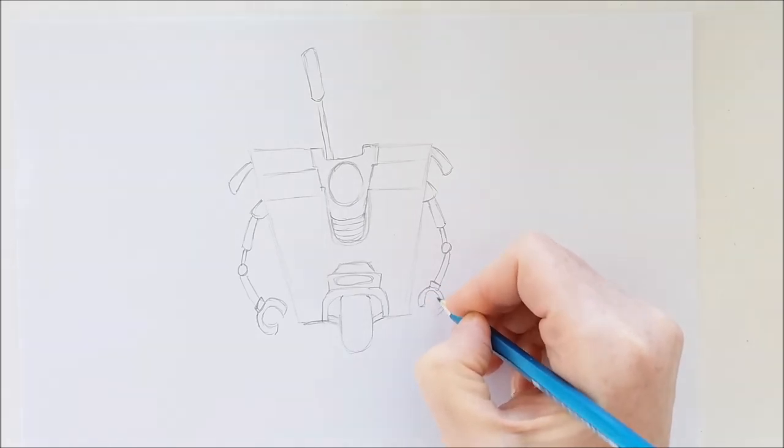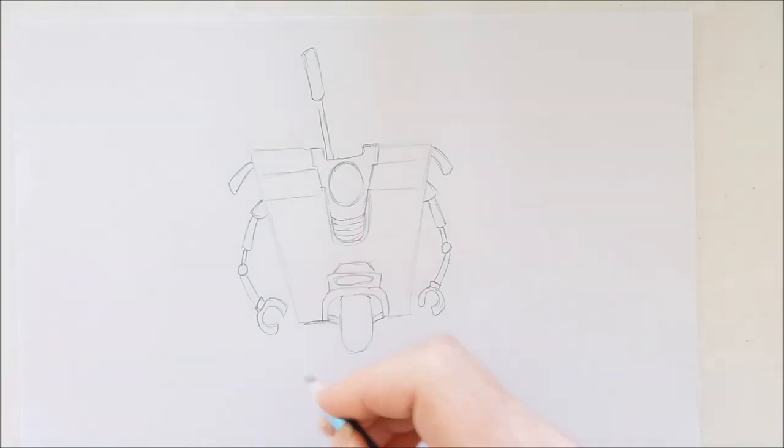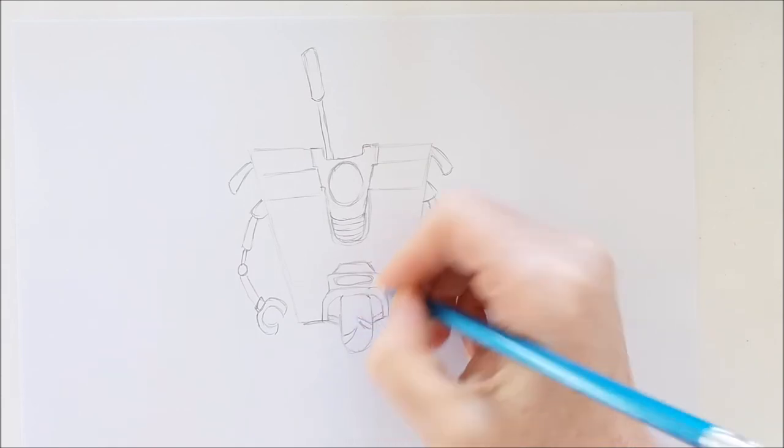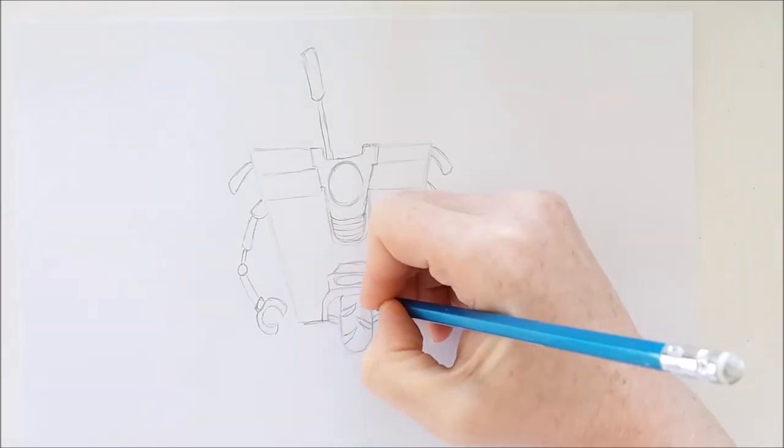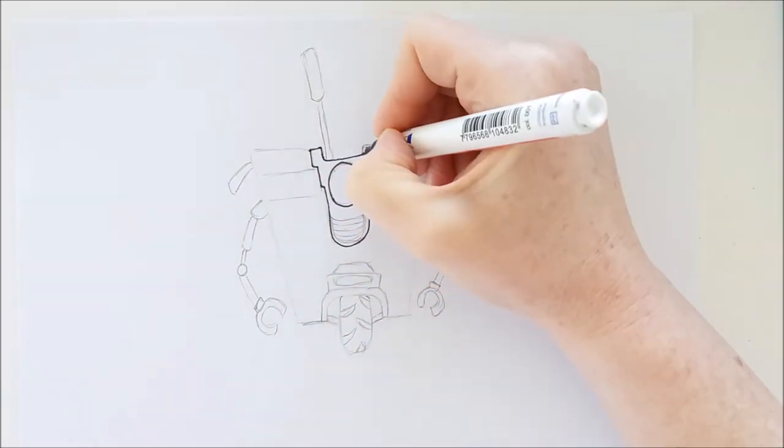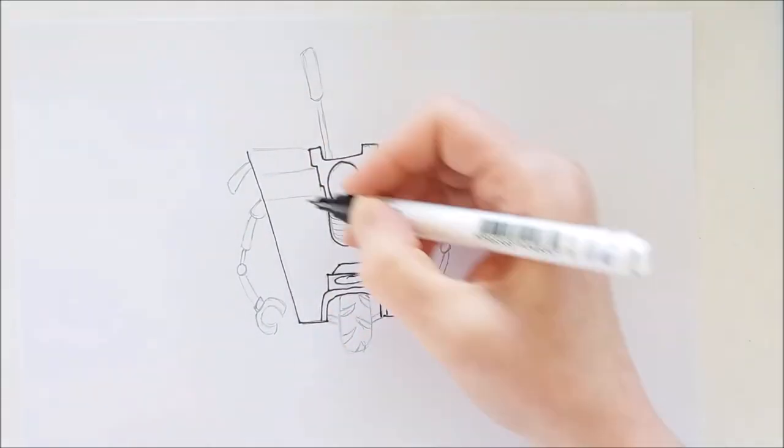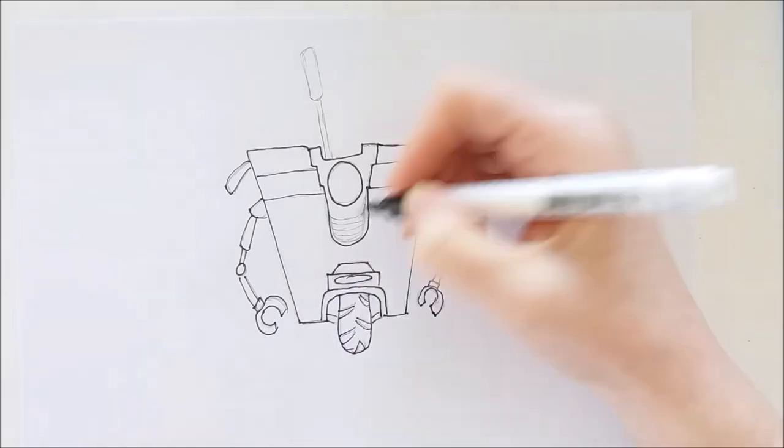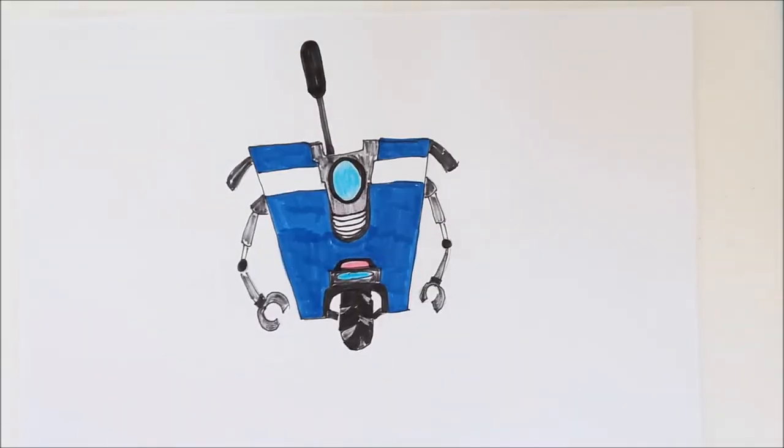So I think what I'm going to do before I outline and color Claptrap is just to add the tread to his tire. Then when I have this done, I'll outline him and color him in. Hey, that does it for today's drawing lesson.